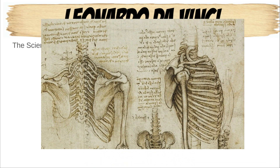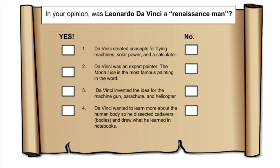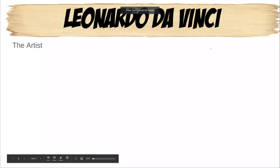We can see how he drew different muscles, how people look — really detailed about the muscles. Our skeletal system: the ribs, the spine, the arm. Here's a skull. So in your opinion, was Leonardo da Vinci a Renaissance man? Remember, it's all going to be based off of all these pictures — whether you think he was or not.